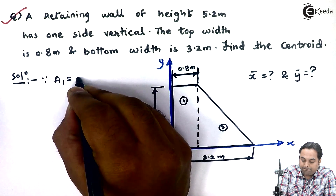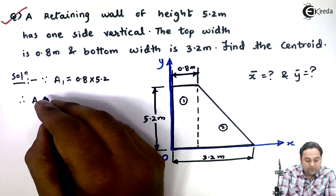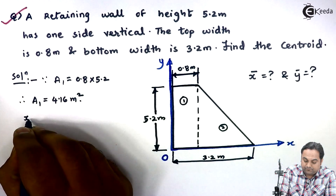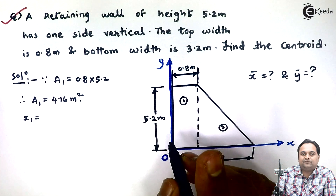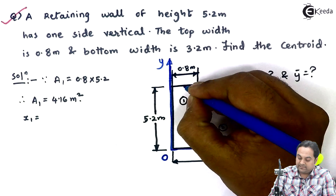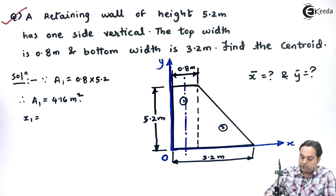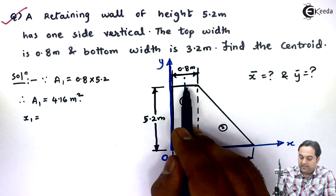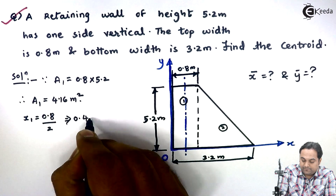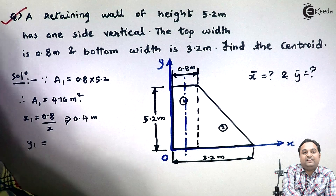Area 1 is for the rectangle: area equals 0.8 × 5.2, therefore Area 1 = 4.16 m². Next, x1 is the location of the centroid along the x-direction for the first rectangle. The y-axis for the first rectangle passes exactly at half of 0.8, so x1 = 0.8 / 2 = 0.4 meters.